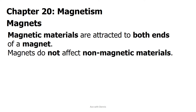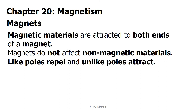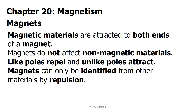Magnets do not affect non-magnetic materials. Like poles repel and unlike poles attract. Magnets can only be identified from other materials by repulsion.